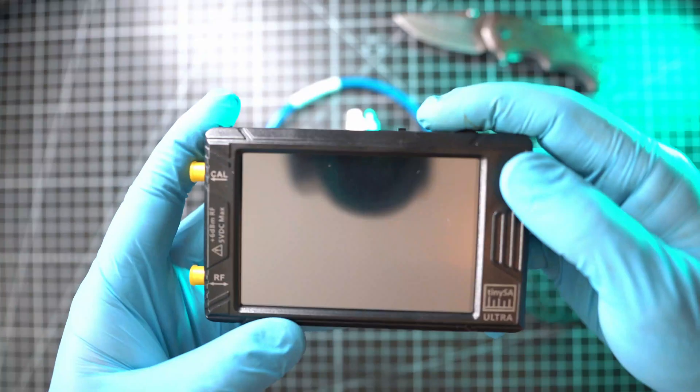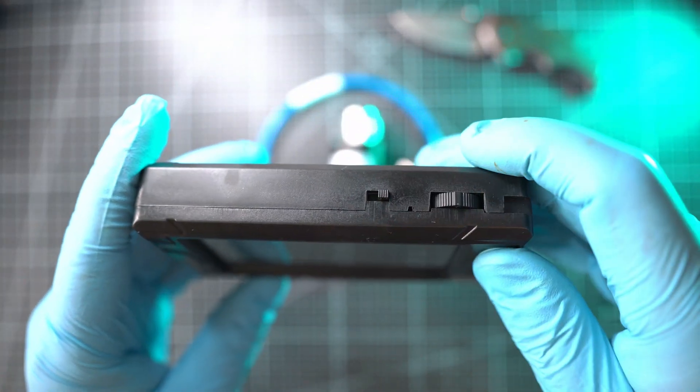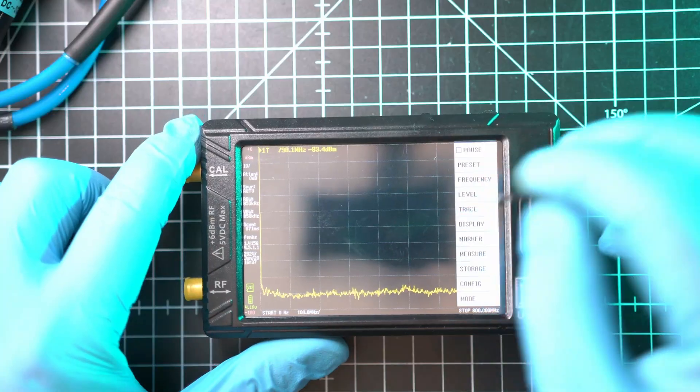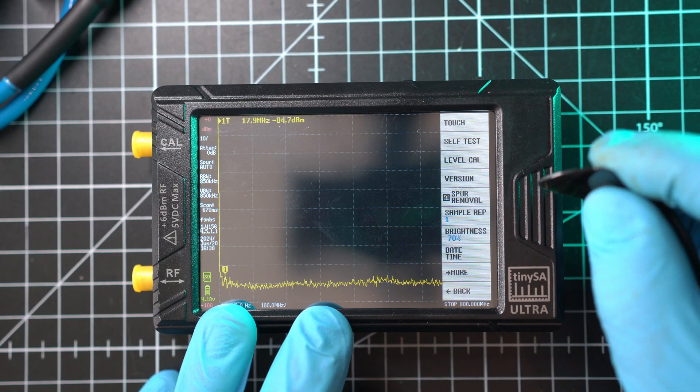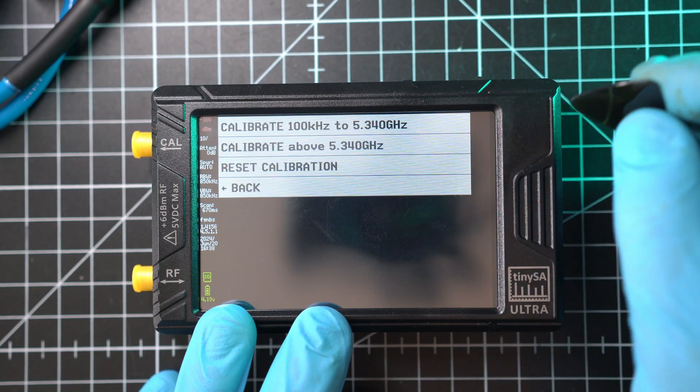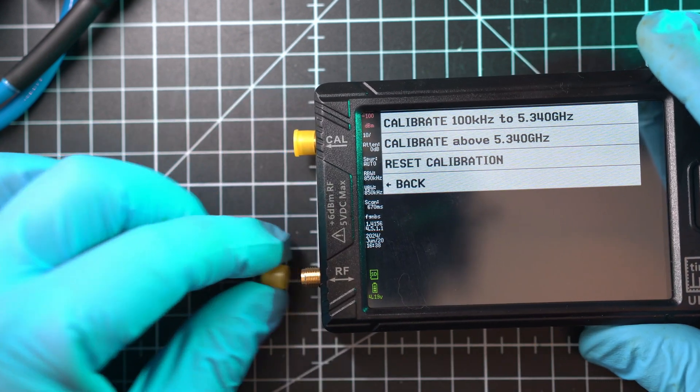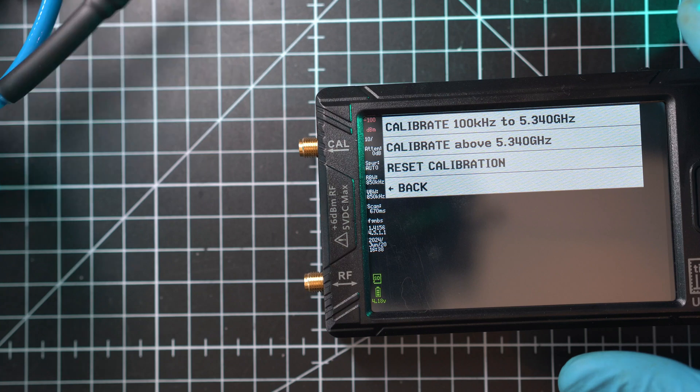Let's start and turn on TinySA Ultra for the first time. We will need to do calibration. So menu, config, level cal, and first option. But I'll attach new cables and adapters to the SMA ports.